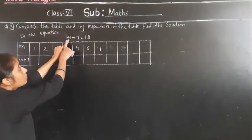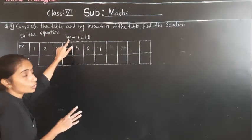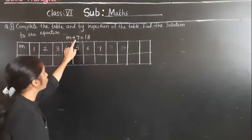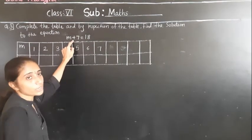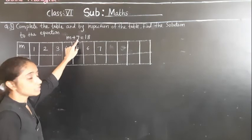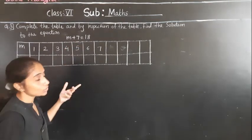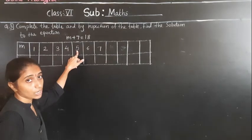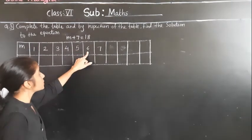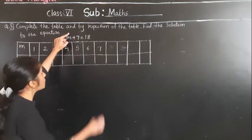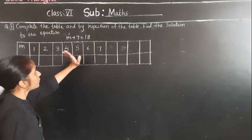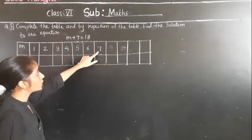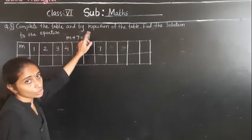If I put 1: 1 plus 7 is 8, not equal to 18. Try 2: 2 plus 7 is 9, not 18. Try 3: 3 plus 7 is 10, not 18. Try 4: 4 plus 7 is 11, not 18. Try 5: 5 plus 7 is 12, not 18. Try 6: 6 plus 7 is 13, not 18. So 6 is not the solution. Try 7: 7 plus 7 is 14, not equal to 18.